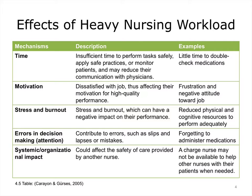Workload is a very important explanatory variable in human factors analysis. Heavy workloads can have a range of consequences as characterized by Carrion and Gurses. They developed a classification scheme which identifies five mechanisms for understanding the effects of a heavy nursing workload. For example, a nurse may have insufficient time to perform tasks safely, apply safe practices, or monitor patients, and this may even reduce their communication with physicians. Stress reduces the physical and cognitive resources to perform adequately. Errors in decision-making, such as a mistake in medication administration, can certainly be affected by workload issues.